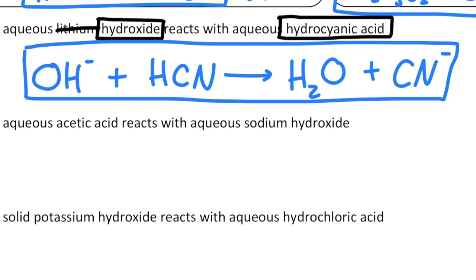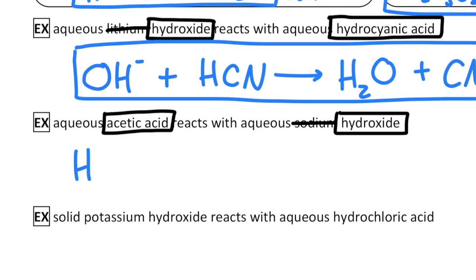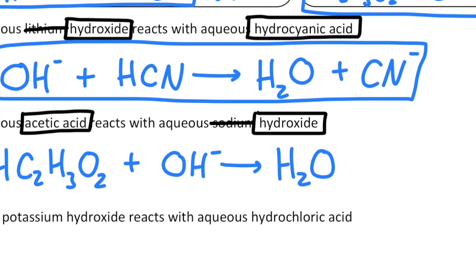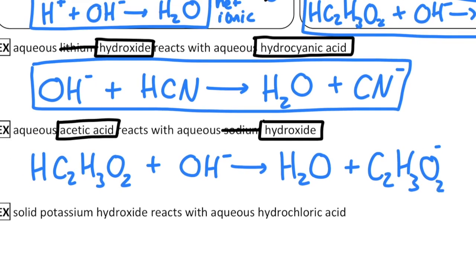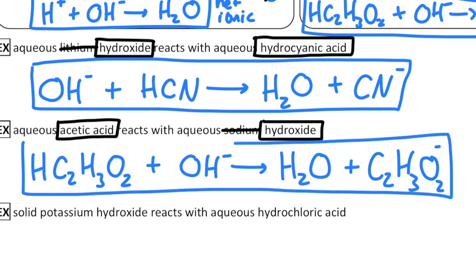If I do the same thing for the second one, acetic acid is weak, so I'm going to keep it together, but sodium hydroxide is strong, and the sodium ion will be a spectator. So for this one, we have acetic acid, hydroxide, OH- will become a water molecule, and what's left over? Acetate. It's the same as the example we did a moment ago up above, just with a different strong base. C2H3O2-. So we have acetic acid plus hydroxide, makes water and acetate. Again, everything's balanced with a one to one ratio.